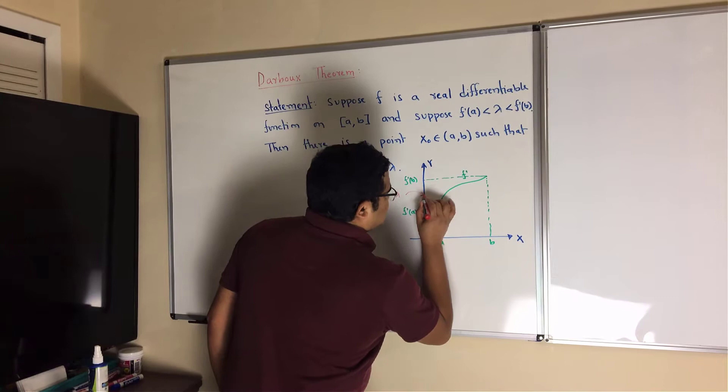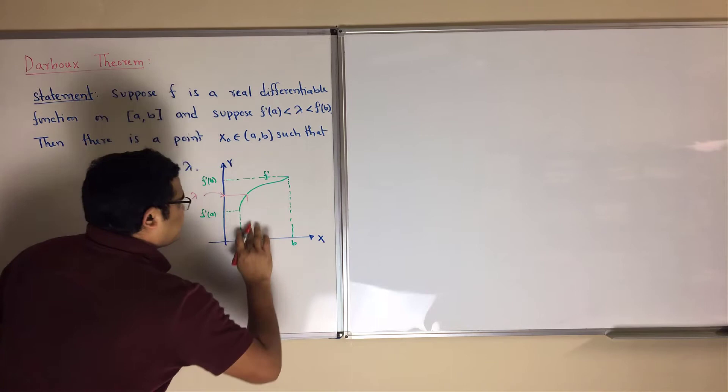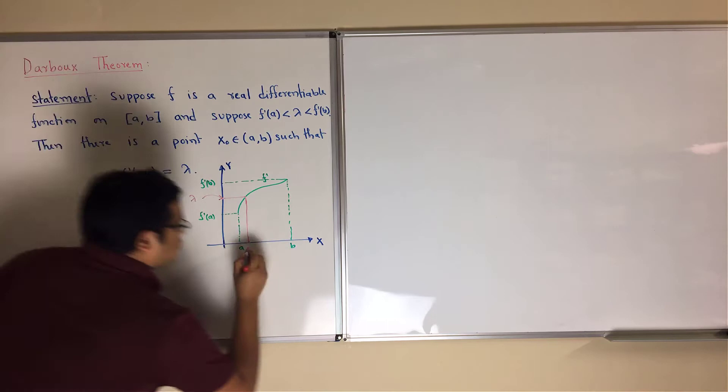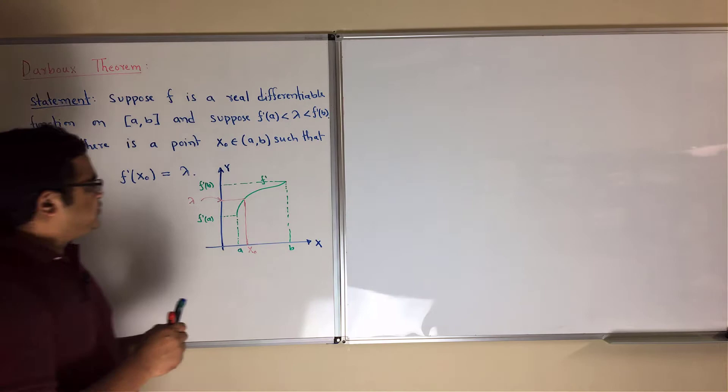Suppose lambda is here. First draw a line parallel to the x-axis, then draw a line parallel to the y-axis. The intersection point would be x0, because at this point f prime of x0 equals lambda.